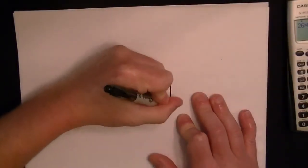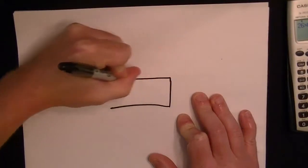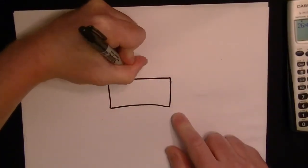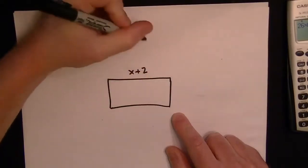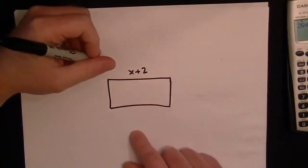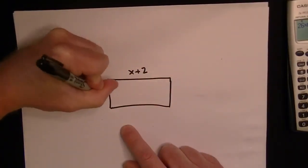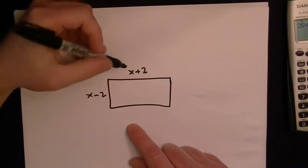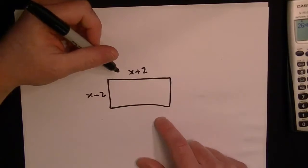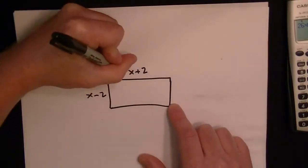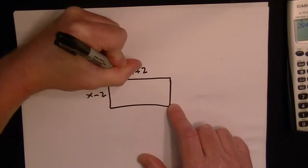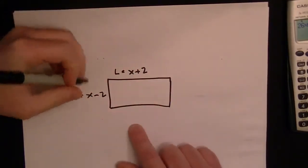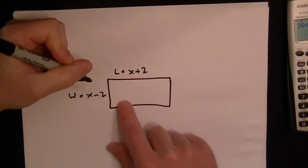We're given a rectangle and we're given the length of the sides. This side here is equal to x plus 2 and this side here is equal to x minus 2. We're basically trying to come up with a formula for the area of the rectangle. We can represent this as the length and the width.